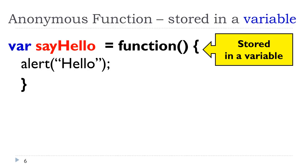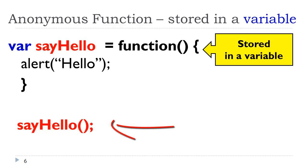Now we need to call that. One way we would call that is by referencing the name of the function with parentheses. Now whether or not you put the parentheses next to the name of the variable depends: number one, on whether there are parameters; number two, on where that's being called.